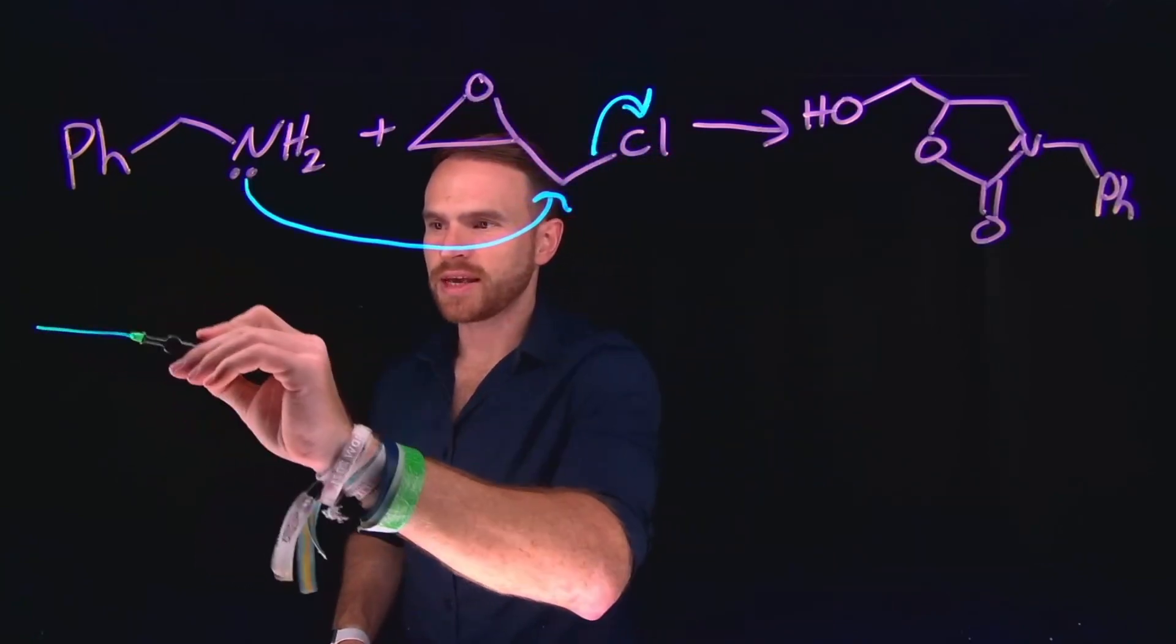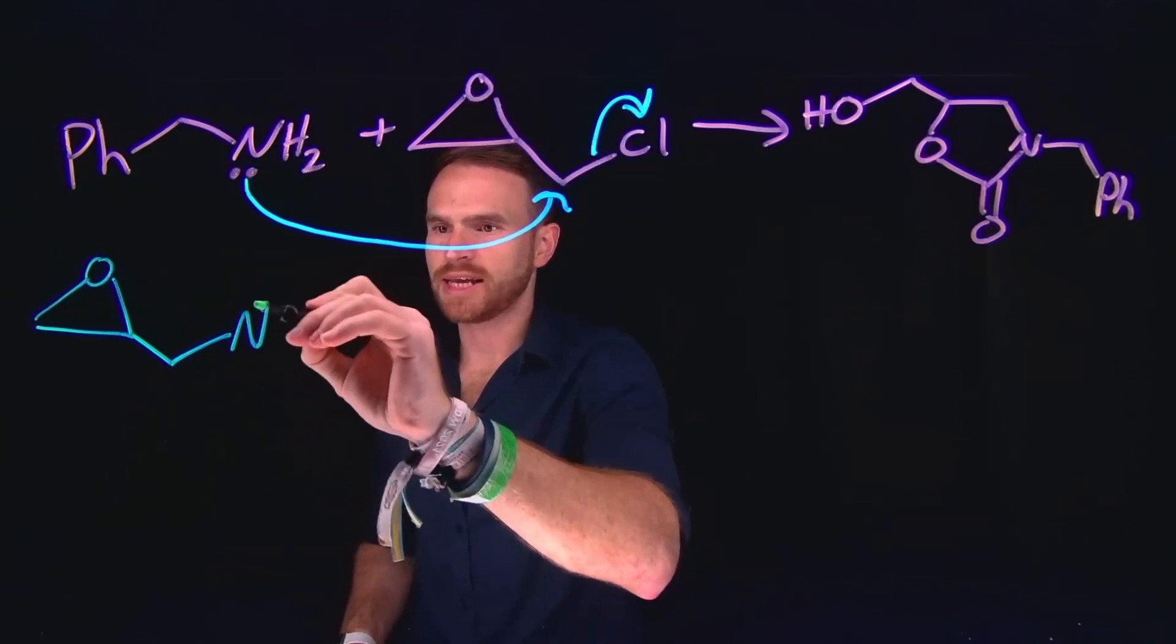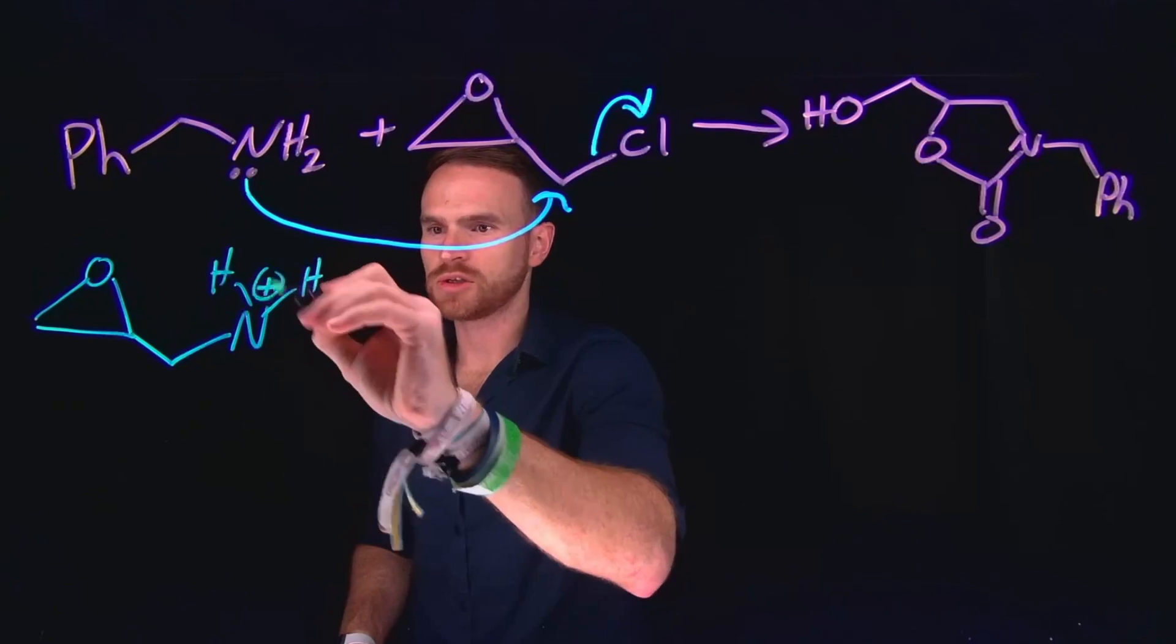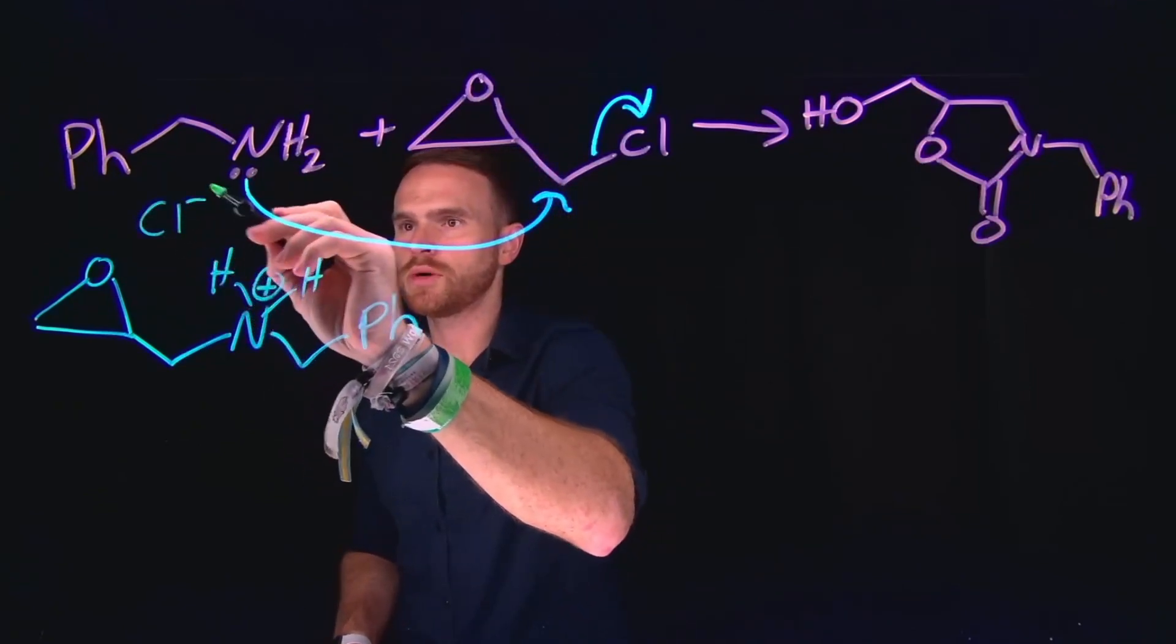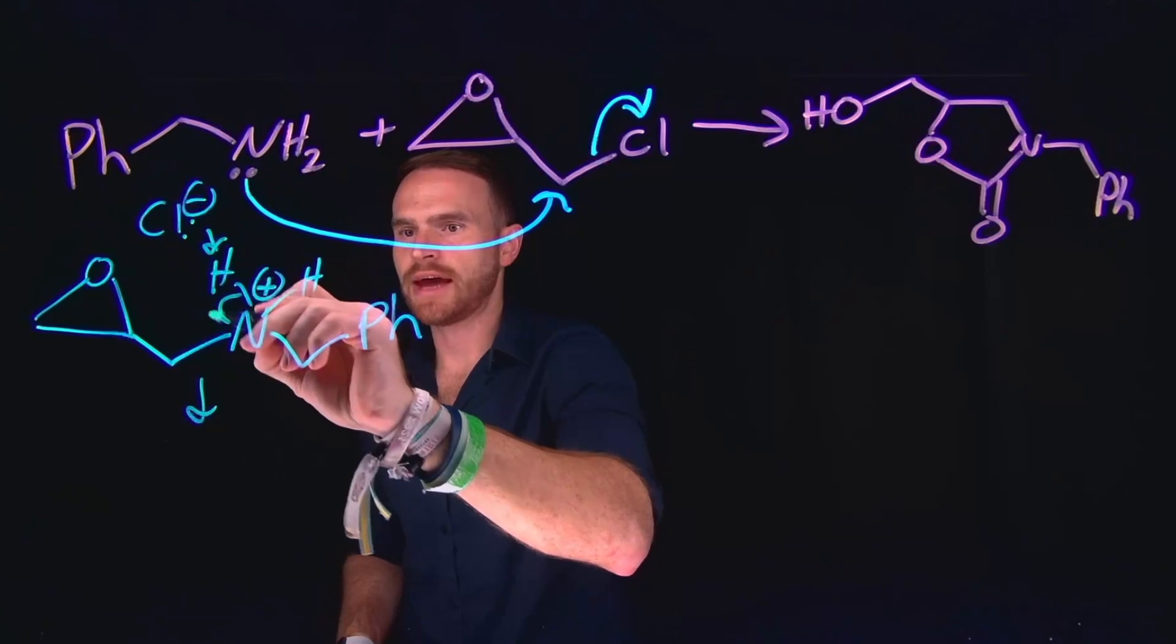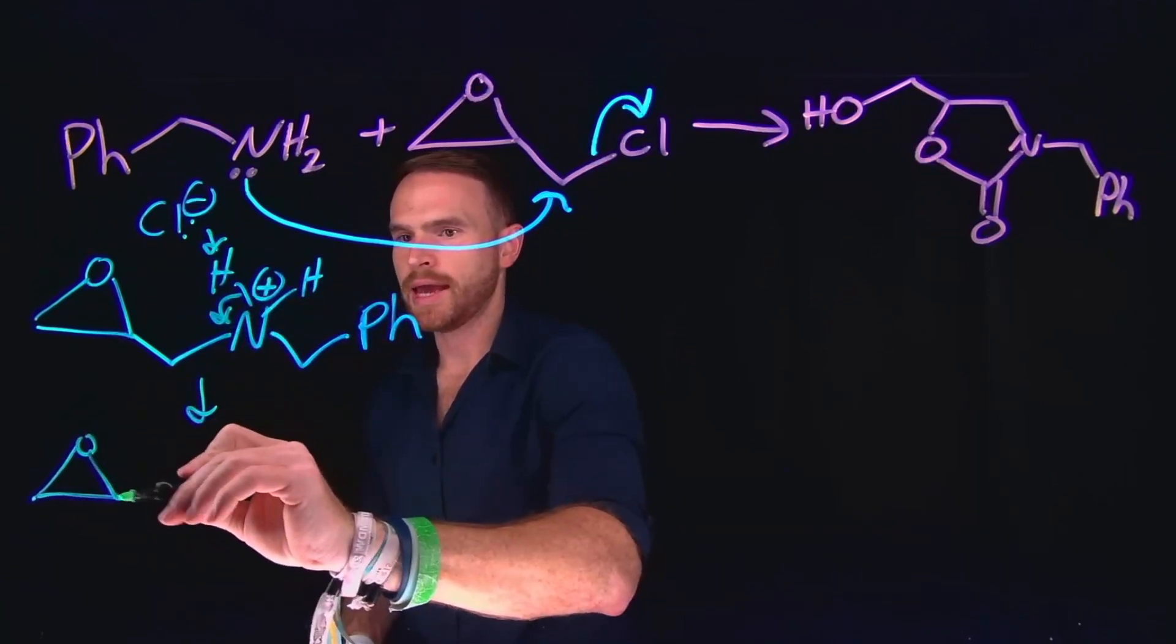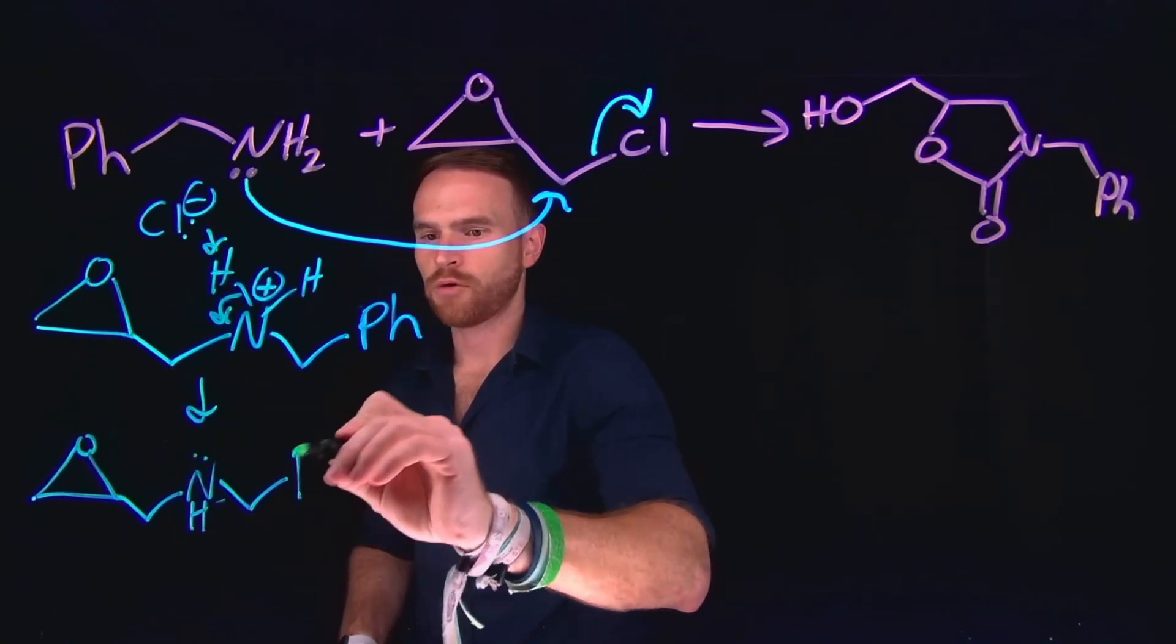This leaves our epoxide ring intact, and we have now appended the nitrogen-containing species to the end of this molecule, and now it is going to be positively charged. And what can happen is the chloride, which was kicked off at this step, can come and deprotonate to make a neutral species where the electrons have now been placed back on our nitrogen, giving us our epoxide ring and now our neutral nitrogen species for our next step to occur.